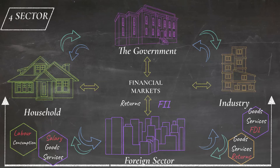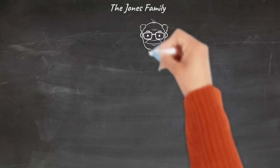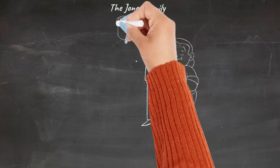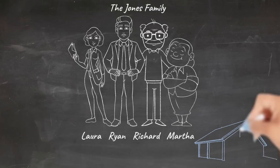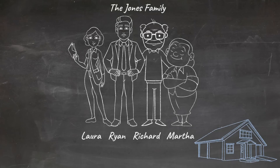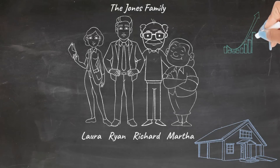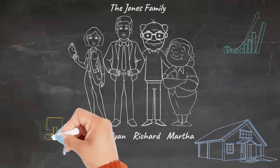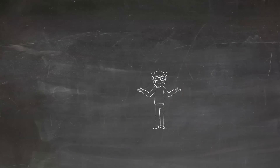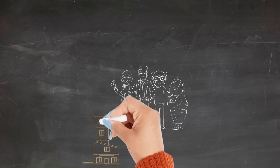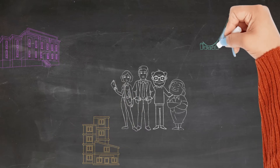This completes the circular flow of economic activities and income under the four-sector model. Now, coming back to the example of the Jones family, let's see how they fit into this circular flow. As we know, they are a part of the household sector. The Jones family live in their own house that Richard had built when he retired from his service in 2010. He has been earning pension ever since. His pension goes into paying household expenses and investing a substantial amount into the stock market and mutual funds, while Martha takes care of the family and manages household purchases. Ryan works for a private sector firm as a manager, while Laura works for the postal department. If we see the economic flow of activities to and from the Jones household to the industry, the government, the financial market, and the foreign sector, we can summarize it this way.